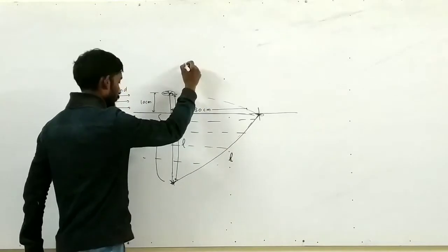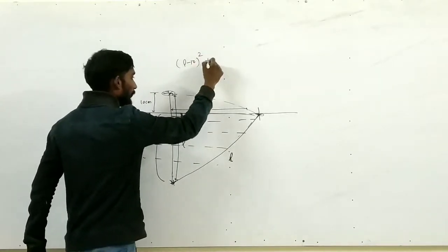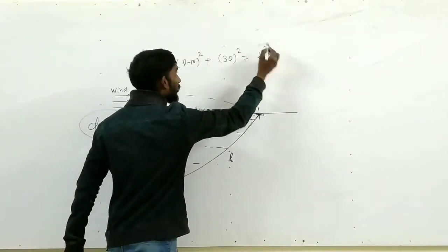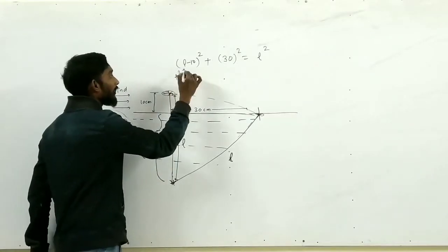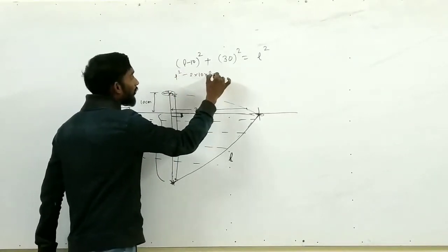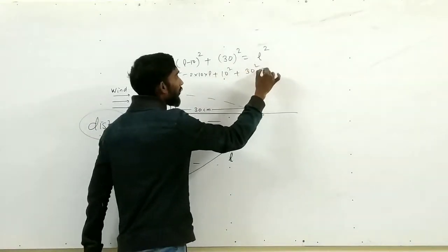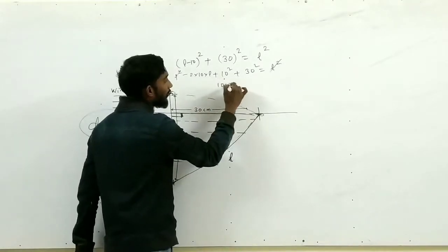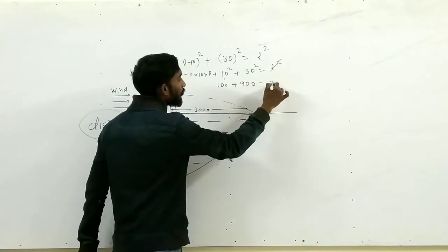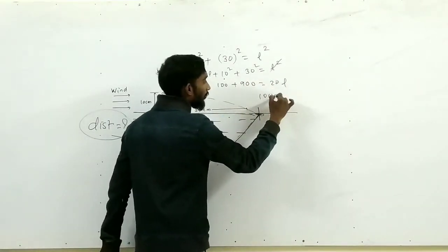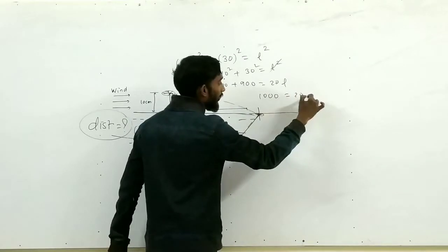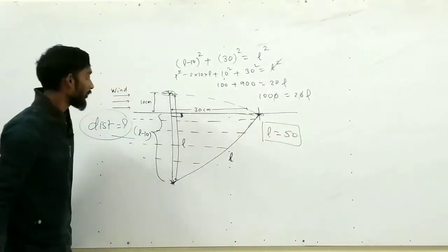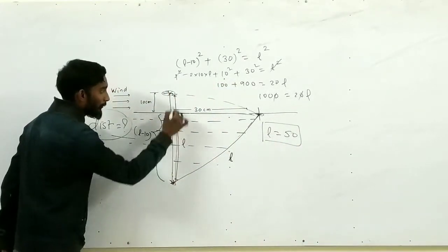So (L minus 10) whole square plus 30 whole square equals to L square. So L square cancels, 100 plus 900 equals to 20L, so L equals 50.